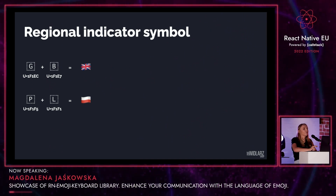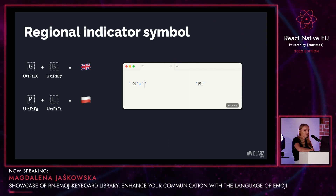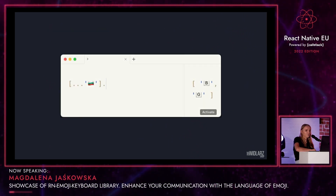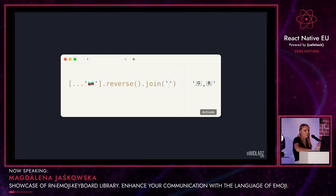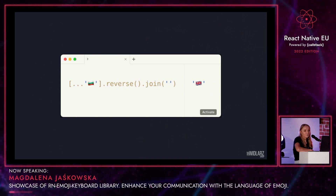Do you think that we can do some JavaScript magic on emojis? Let's see what happens when we add two regional indicator symbols together — and we end up having a British flag. Would any other JavaScript method work on a flag? We can also try reversing. And after reversing the Bulgarian flag, which is the combination of BG, we end up having also a British flag.